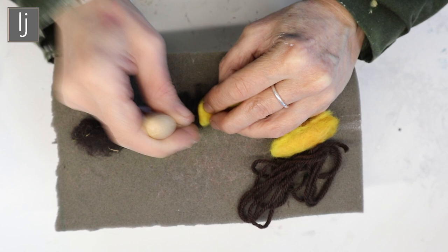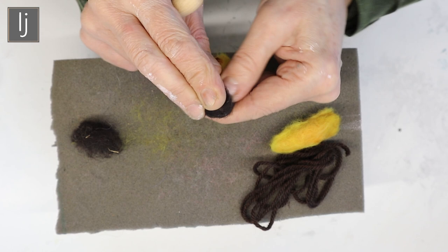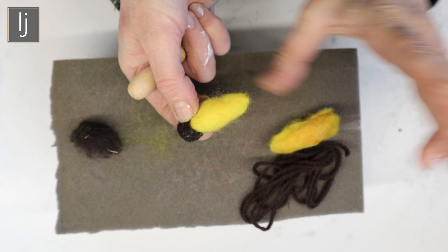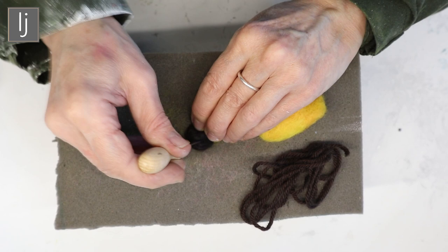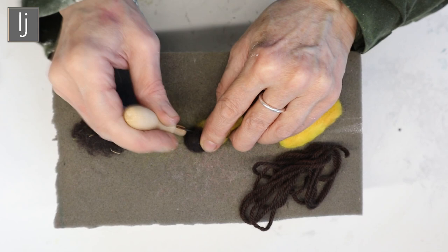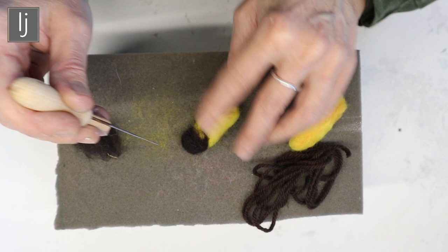This is going to be fairly rounded so I'm just going to fold his head over, so you end up with a little round head like so. I'm just going to felt that down. There you go, it's really pretty simple.